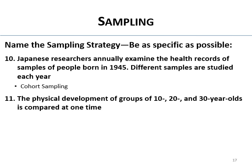The physical development of groups of 10, 20, and 30-year-olds is compared at one time — different age cohorts at one time. You're looking across age groups at one time — that's cross-sectional sampling. Hopefully this made sense; if you have any questions, post them on Canvas and we'll get them answered.